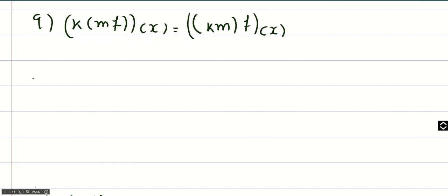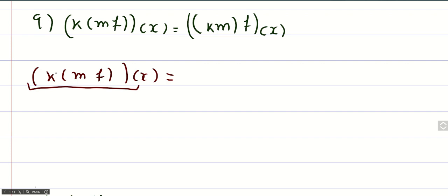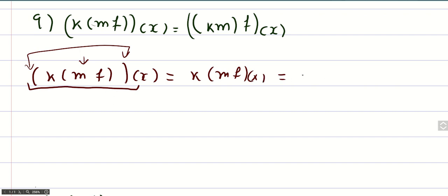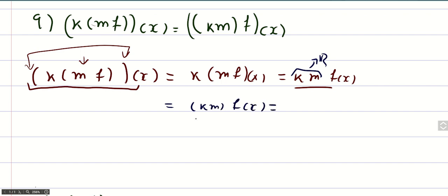For the ninth axiom, we have k times (m f of x). We apply the definitions from the outermost parenthesis inward. Applying the definition gives k times (m f of x), and then applying again gives k m f of x. Here k and m together form one scalar, so we can group them and obtain km times f of x. That's exactly what we wanted, so the ninth axiom is satisfied.